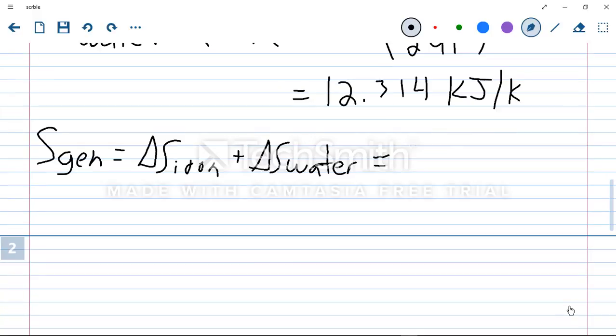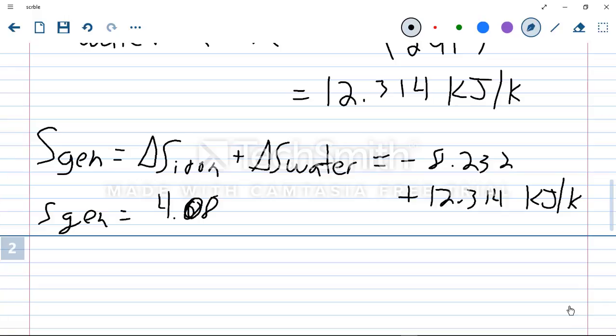Applying this formula, we get negative 8.232 plus 12.314, and this is in kilojoules per Kelvin. So we know that our entropy generated for this process is a positive 4.08 kilojoules per Kelvin, that being our final answer.